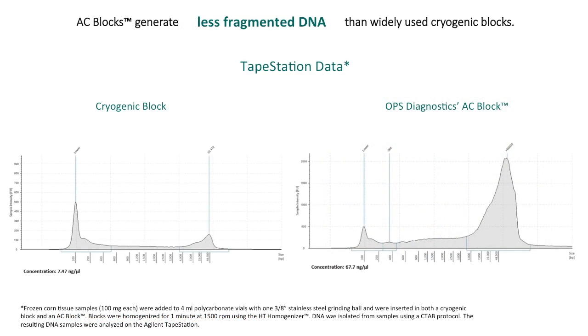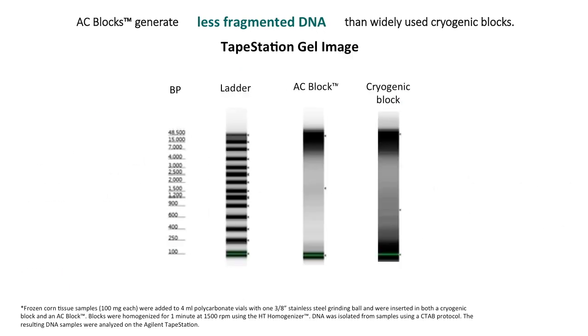Research has shown that samples homogenized using the AC block kit result in less fragmented DNA compared to samples homogenized with other commercially available cryogenic blocks. The active cooling design of the blocks allows for samples to hold cryogenic temperatures, which is imperative for the extraction of high quality DNA and RNA.